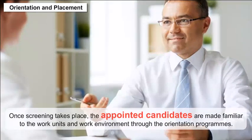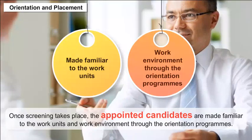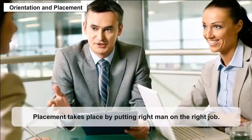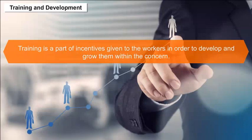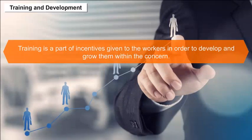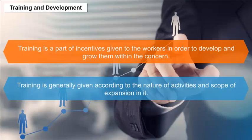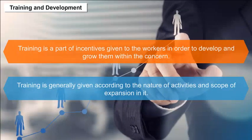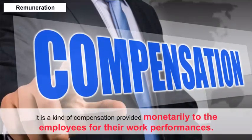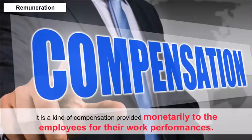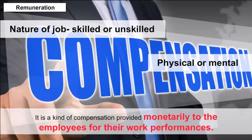Orientation and placement: once screening takes place, the appointed candidates are made familiar with the work units and work environment through orientation programs. Placement takes place by putting the right man on the right job. Training is a part of incentives given to the workers in order to develop and grow them within the concern. Training is generally given according to the nature of activities and scope of expansion. Remuneration is a kind of compensation provided monetarily to the employees for their work performances, given according to the nature of the job — skilled or unskilled, physical or mental.